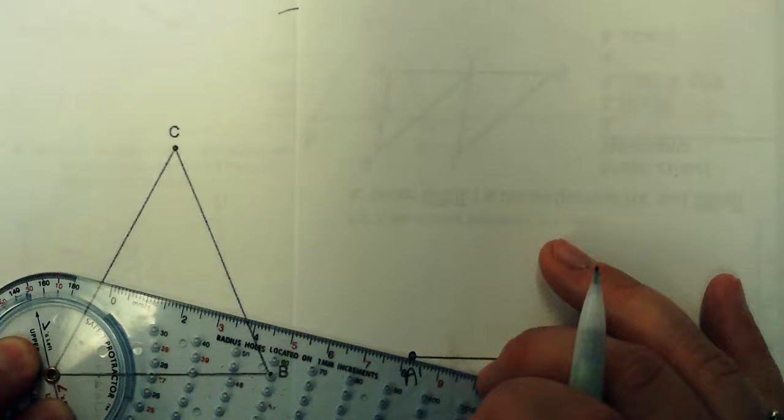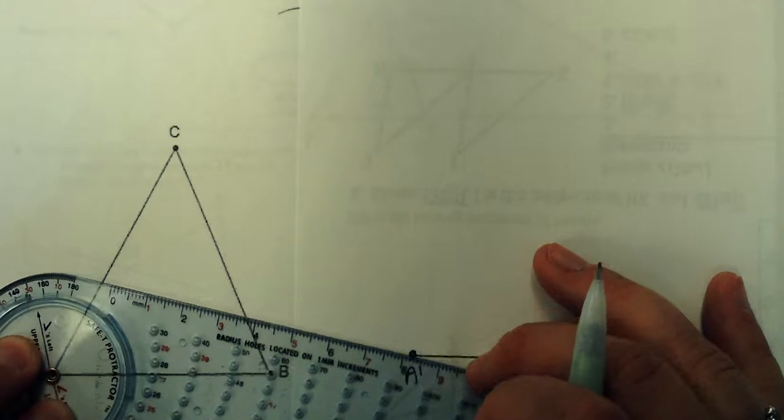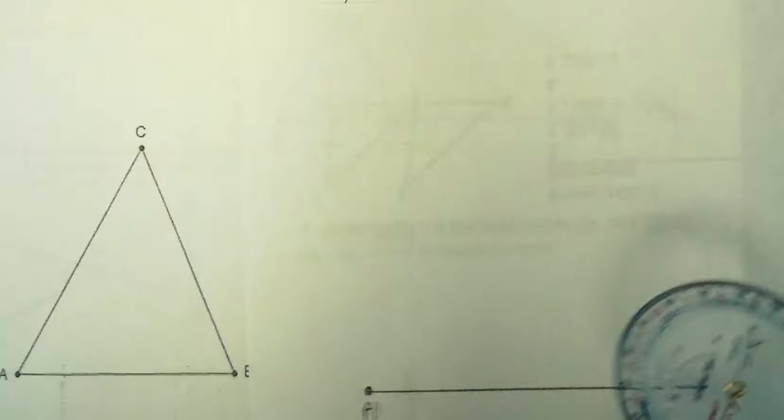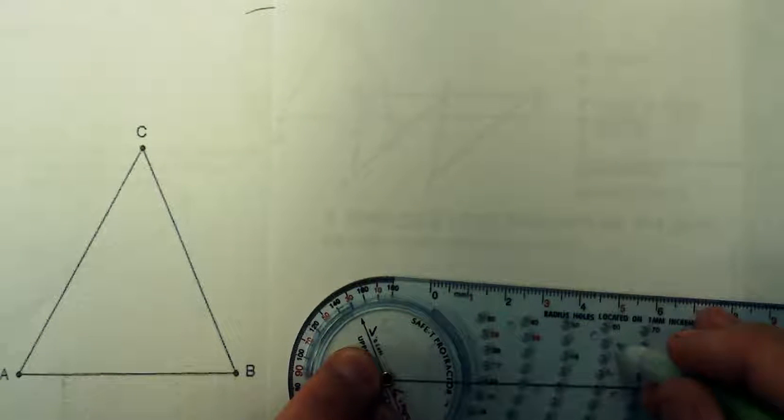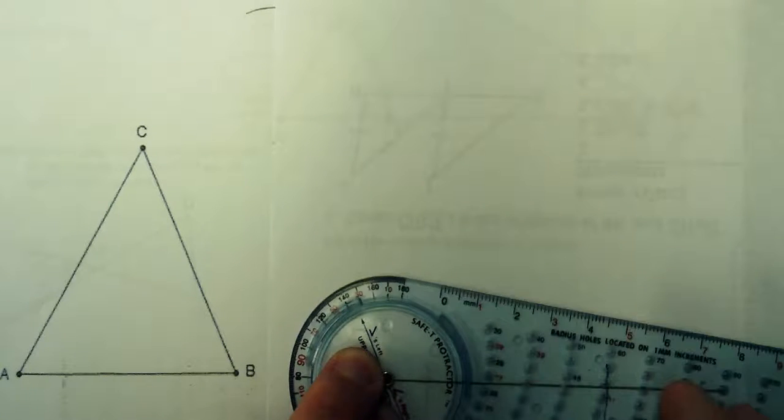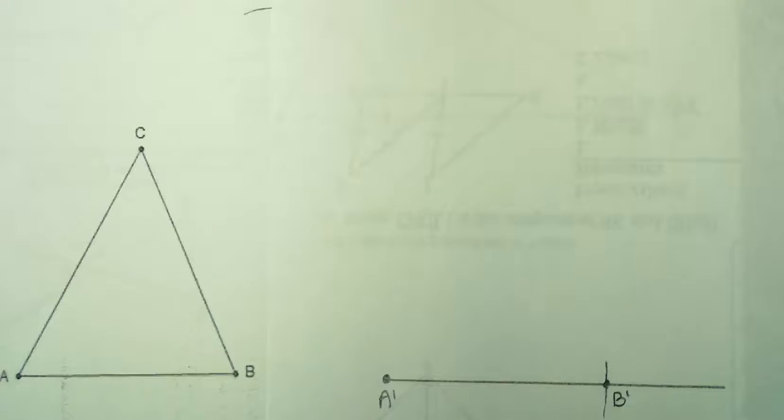I'm going to say about 59 here, right below the 60. So then I'm going to come over to where I'm going to copy this, and 59, make a little arc. There's my B prime. I have copied the side.